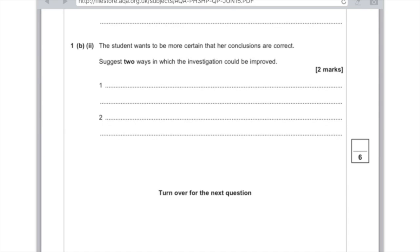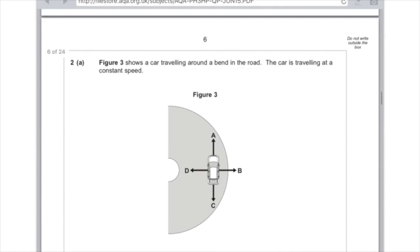1b part 2. The student wants to be more certain that her conclusions are correct. Suggest two ways in which the investigation could be improved. So any suitable improvements here. So first of all, she could measure the number of swings over a wider range of pendulum lengths. She could measure the number of swings over a wider range of bob masses. She could measure the number of swings made over a greater period of time, or she could repeat each measurement, and that's always a really good choice in these sorts of questions.